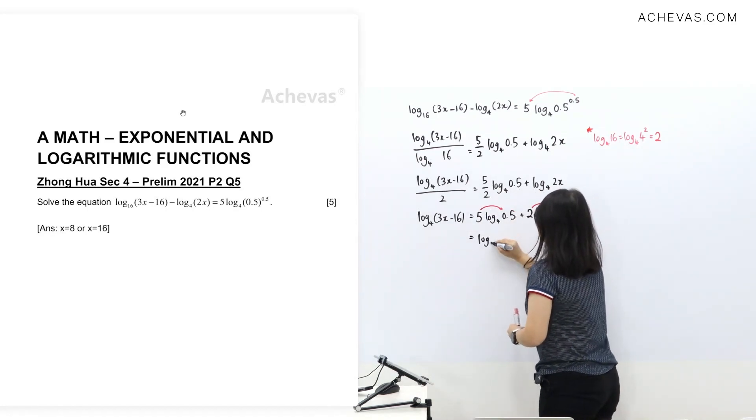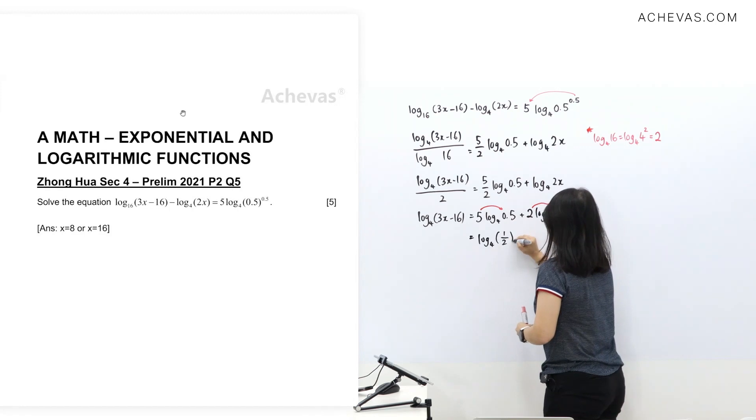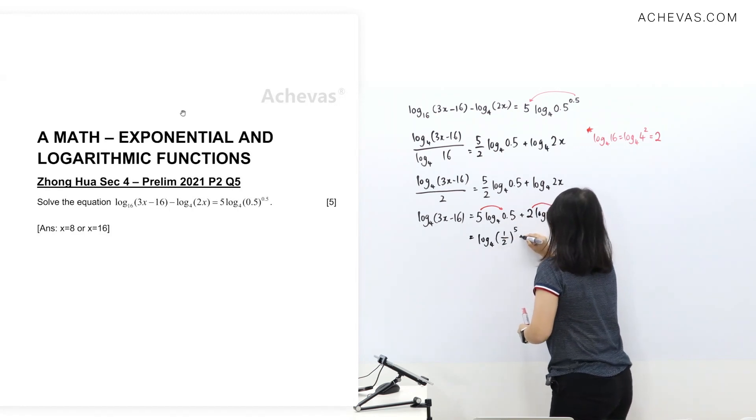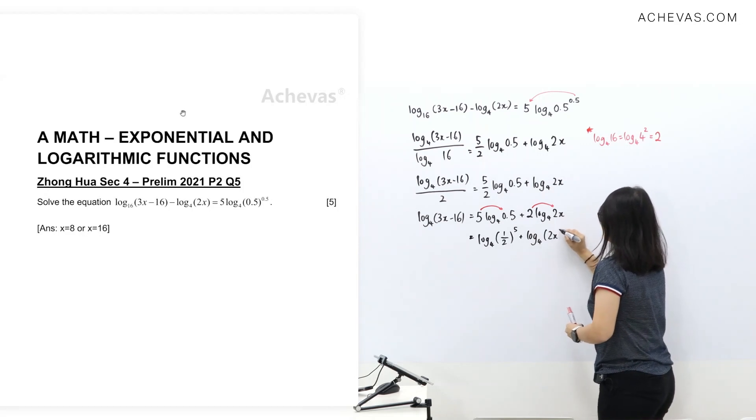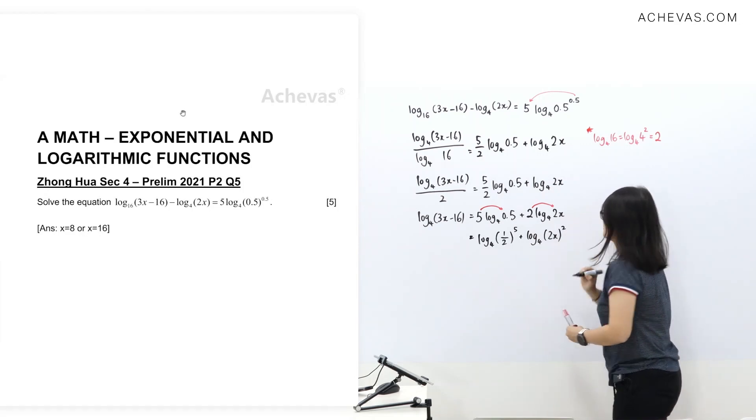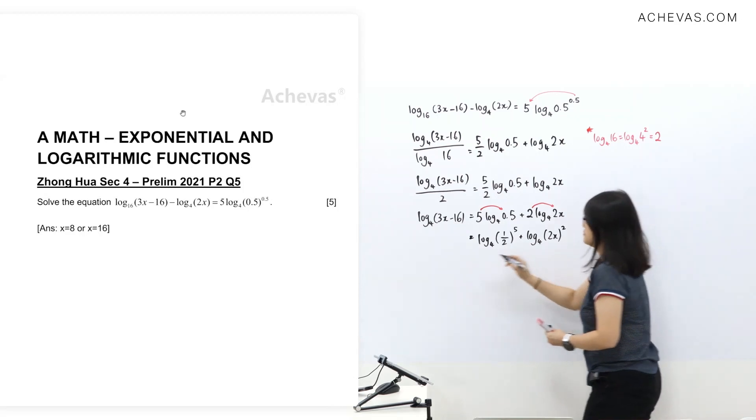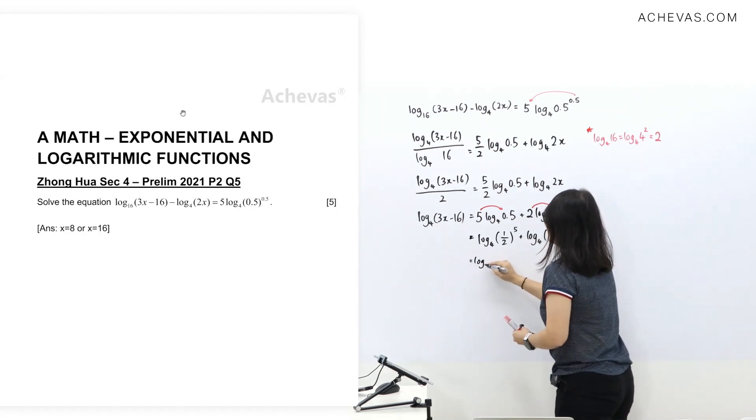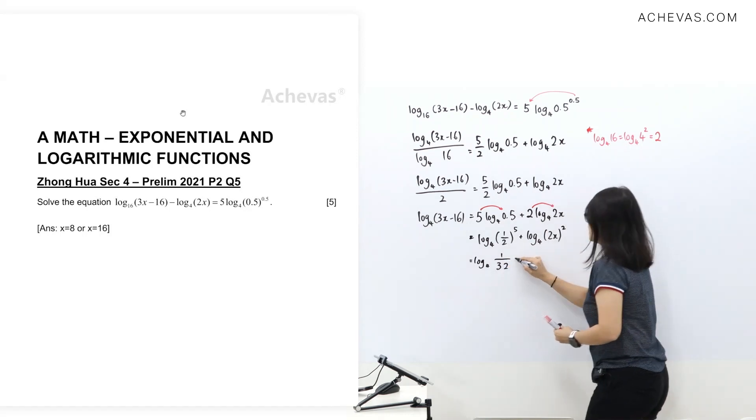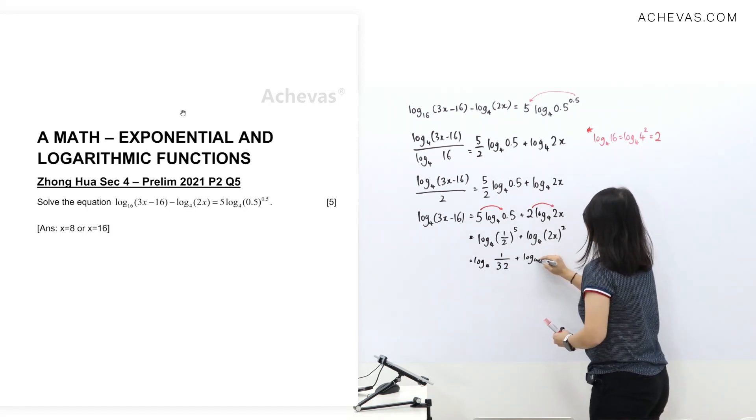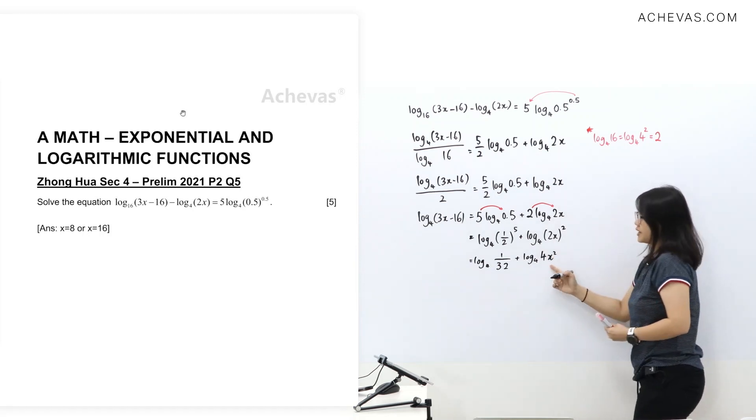Now, I do not like to do decimal, so I'm going to write this as half. I'm going to raise power 5. Remember the bracket, power 2. Let's go. Half power 5, you'll get 1 over 32. And be careful of this. Both need to square. So, you get 4x square.